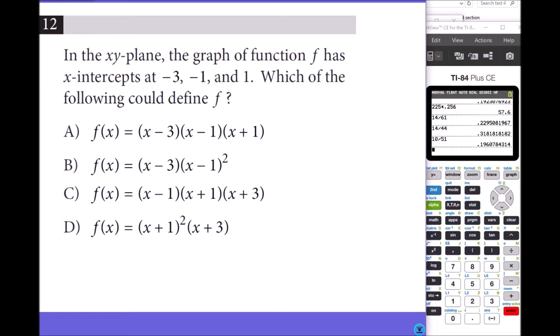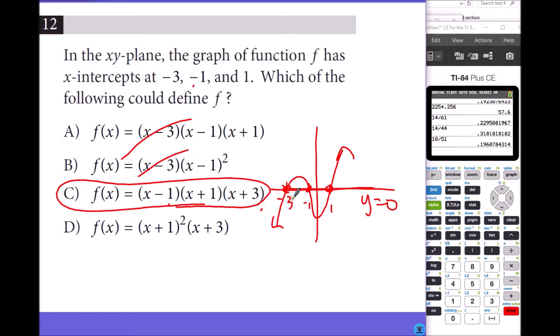Number 12: In the XY plane, the graph of function F has X-intercepts at negative 3, negative 1, and 1. Which of the following could define F? If you're looking for when it equals 0, these numbers need to make Y equal to 0. So X minus 3 will become 0 when X is 3, X plus 3 when X is negative 3. X minus 1 can be 0 when X is 1, and X plus 1 when X is negative 1. So here's the list of the roots using the factors. We call these X-intercepts, roots, solutions, and X-intercepts. They all mean the same thing.